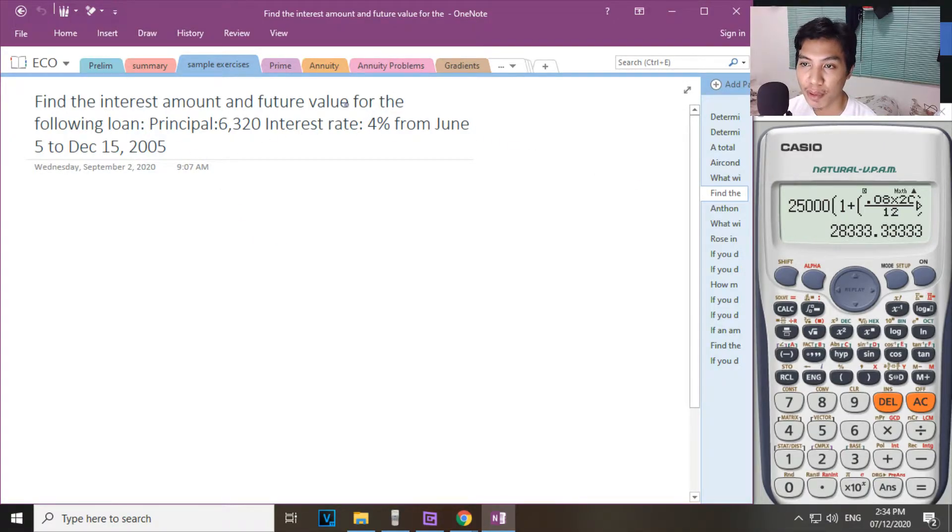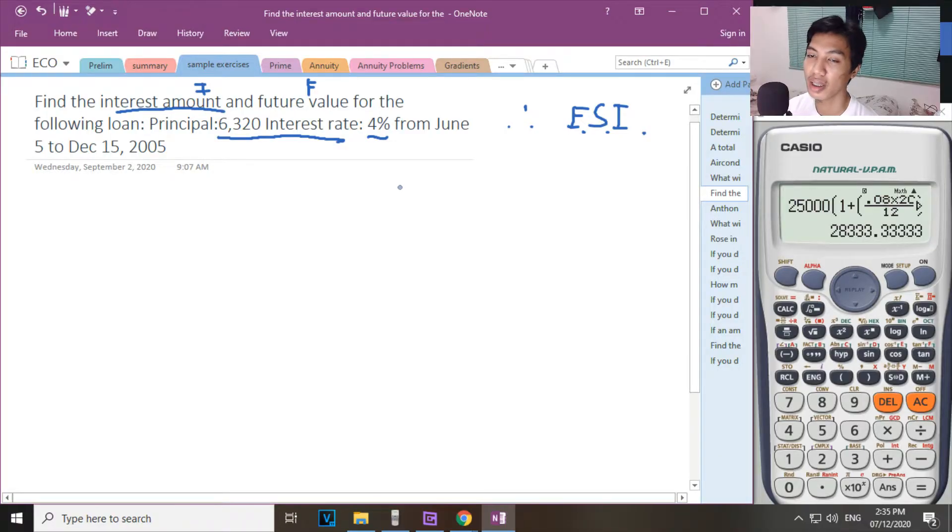For problem number 6. Find the interest amount and the future value. Interest amount, so that is malaking I. And then the future value, this is F. For the following loan. Ang principal mo is 6,320 interest rate 4%.